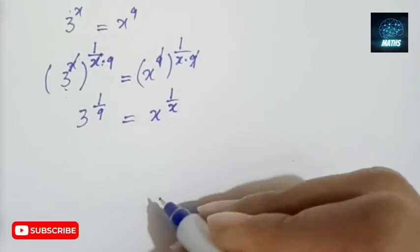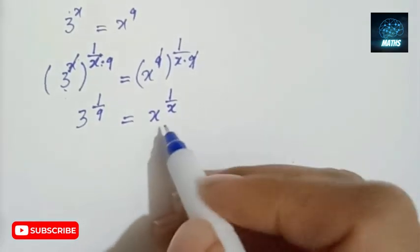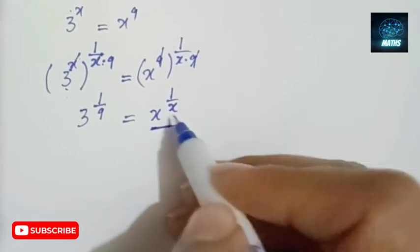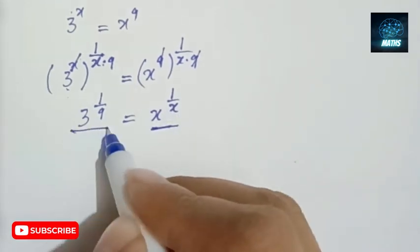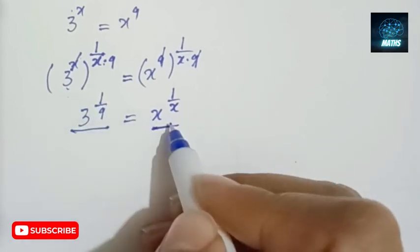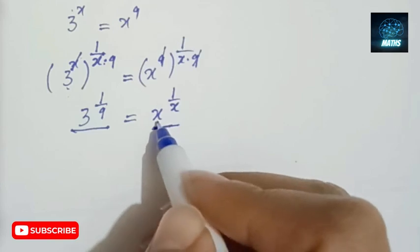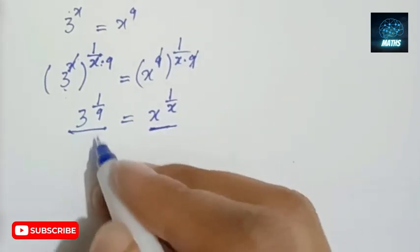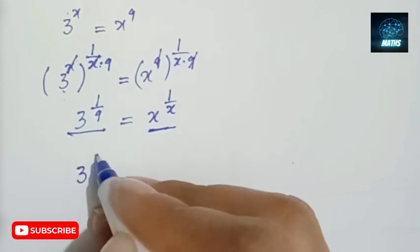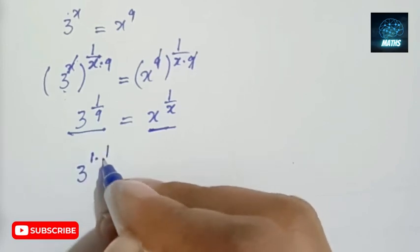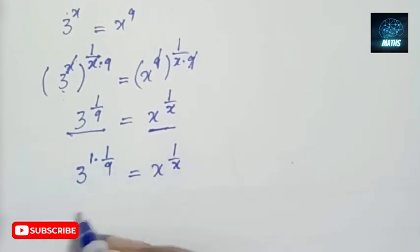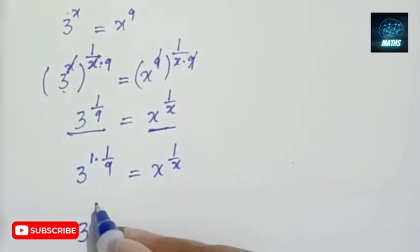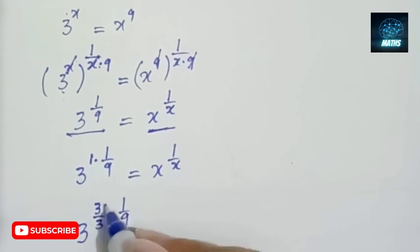And on the right side the 9 cancels, giving x to the power 1 over x. So I can write: x to the power 1 over x equals 3 to the power 1 over 9. Now I want to rewrite 3 to the power 1 over 9 in the form of something to the power 1 over that same something.